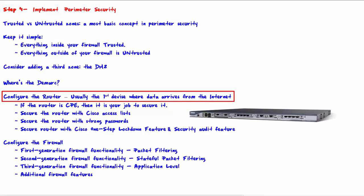Securing the router is most often done by using access lists, or ACLs. Cisco access lists have both standard and extended access lists. Standard ACLs filter solely based on the source IP address of the packet. Extended ACLs offer more functionality — you can filter on source IP address, destination IP address, source port, and destination port, plus more. So you may decide what source and destination IP addresses and ports are allowed to pass the router, and then enforce this with an ACL.